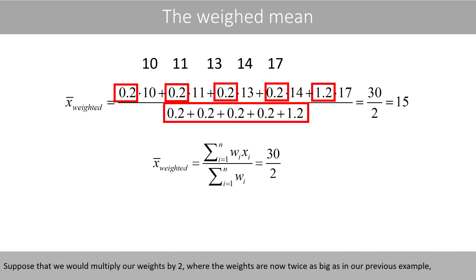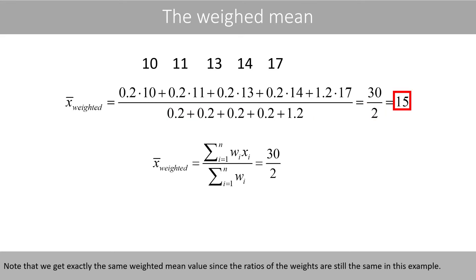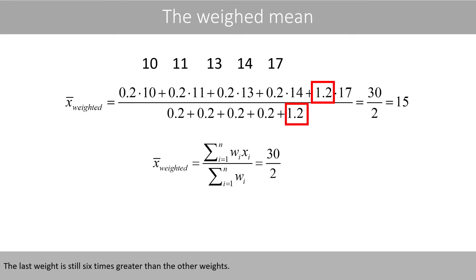Suppose that we would multiply our weights by 2, where the weights are now twice as big as in our previous example. Then the sum of our weights is 2, which means that we need to divide by 2 to get the correct weighted mean value. Note that we will get exactly the same weighted mean value since the ratios of the weights are still the same — the last weight is still 6 times greater than the other weights.